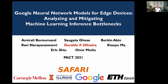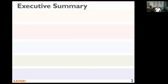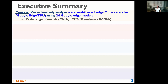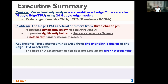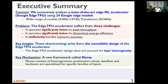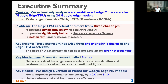This work was led by Amirali Boroman during his internship at Google. In this work, we extensively analyzed 24 edge neural network models from Google while running inference on the Google Edge TPU accelerator. We identified three main challenges: the accelerator operates significantly below its peak throughput and theoretical peak energy efficiency, and its memory system is not efficient. Our analysis reveals these challenges arise from the monolithic one-size-fits-all design. To address this, we propose MENSA, a framework that maps each neural network layer to its most appropriate hardware accelerator, improving performance and energy efficiency by 3x and 3.1x compared to the baseline Edge TPU.